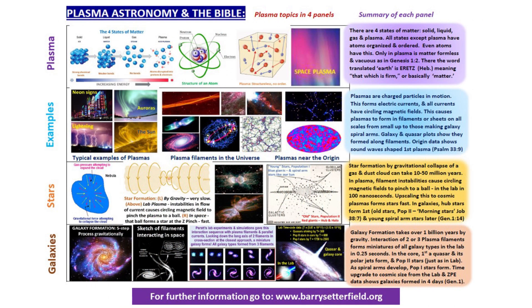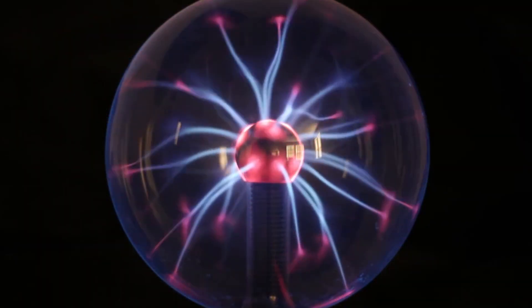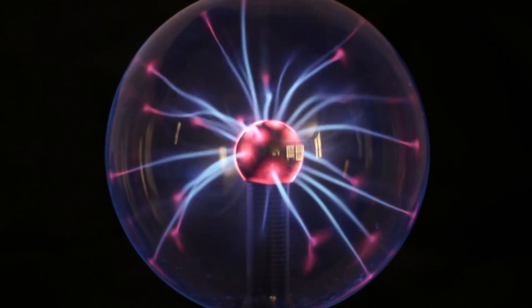A chart is available which gives a summary of this session. Like the chart, we concentrate on four aspects of plasma astronomy and the Bible, and related matters. This makes it convenient to stop and discuss these topics with the class if need be. The class should therefore have a copy of the chart before them. We start with the first panel.